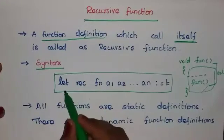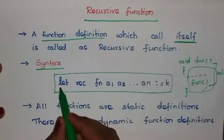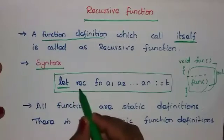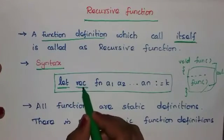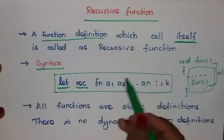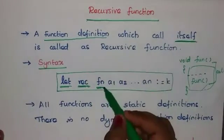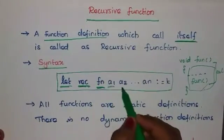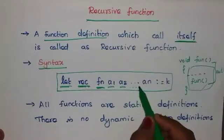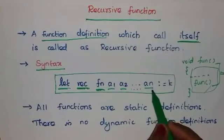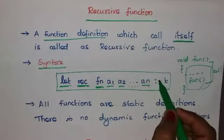This is the syntax of the recursive function. 'Let' here is a keyword and 'rec' means this is a recursive function. We should add 'rec', this is the function name, and a1, a2, etc. 'an' means arguments, and then the formula is given.